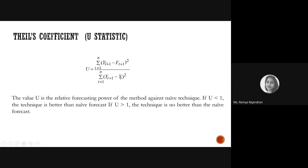The formula for Theil's coefficient is: summation of the error squared divided by summation of (y_{t+1} minus y_t) squared — that is, the difference between the last two actual values. This is actually a relative forecasting power measure and is one of the very important methods used to evaluate your model.